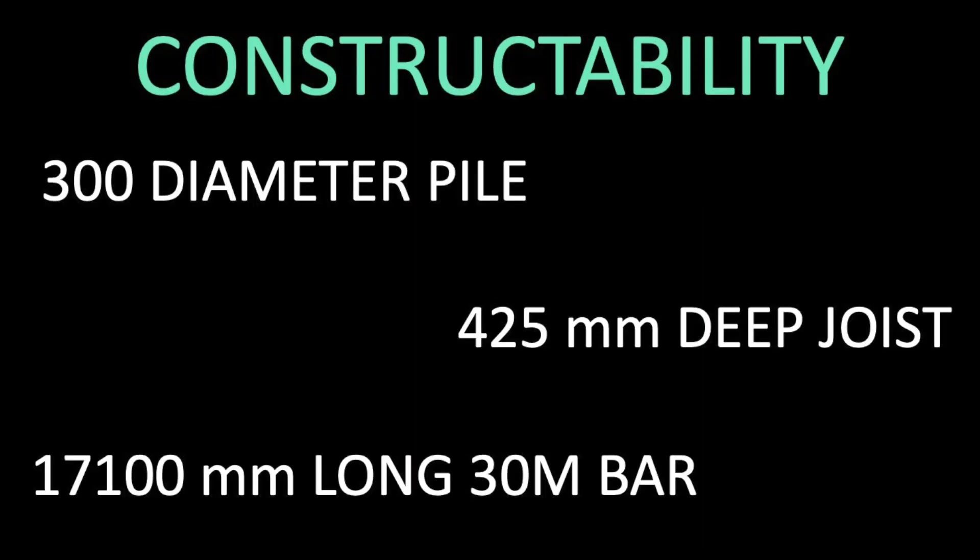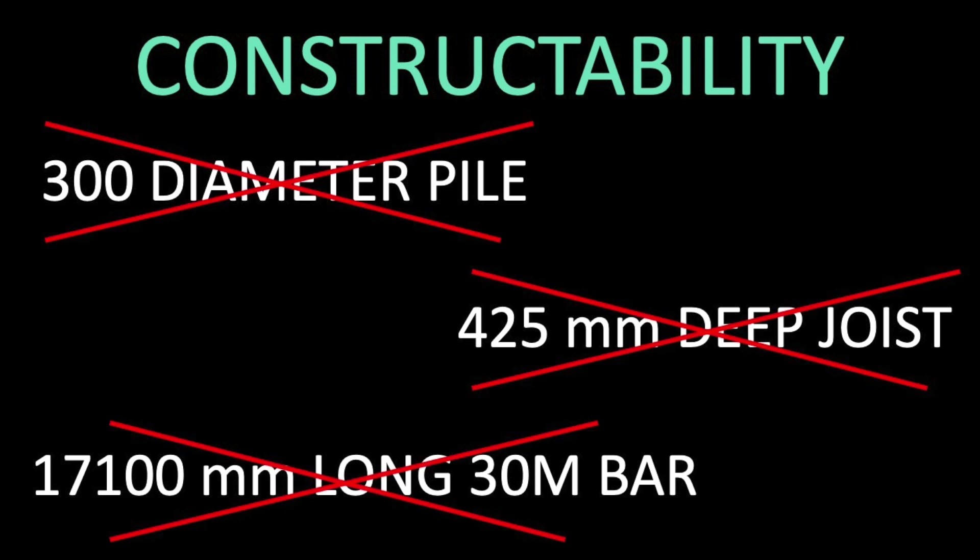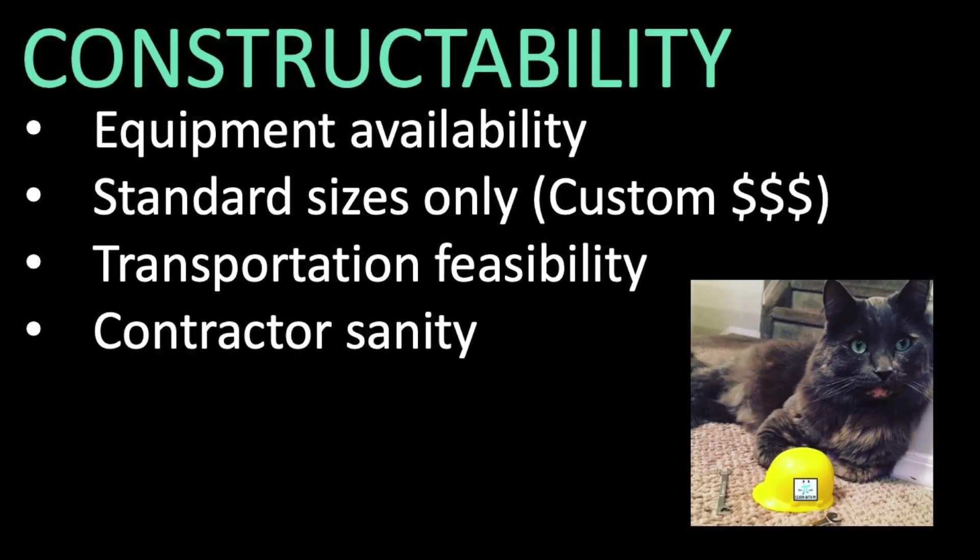When you first start working, it can feel like you're at a restaurant and you keep trying to order things that aren't on the menu. You can't always get the exact size or shape of something that your calculator tells you you want. This could be for a bunch of reasons. Maybe it's not a standard size, it's too big to ship, or it's just not common in your market.